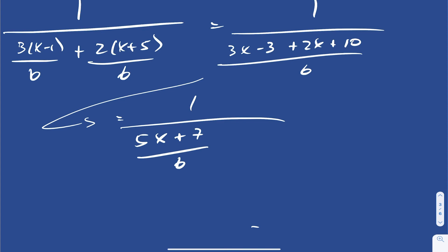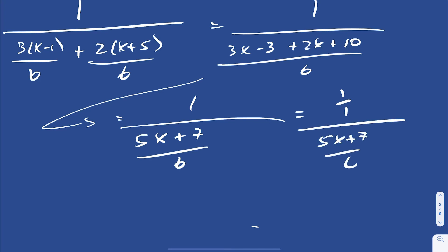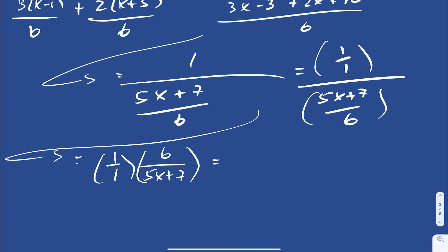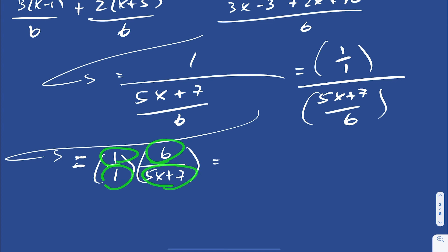Now we're in a situation where we have fraction divided by fraction. Whenever you have fraction divided by fraction, you can change the division to multiplication and flip the second expression. So this becomes 1 over 5x plus 7, multiplied. Looking here, there's no simplification between any of the terms, so you multiply top with top and bottom with bottom, giving us 6 over 5x plus 7.